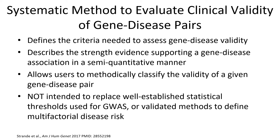Future iterations will expand the framework to consider the evaluation for oligogenic or multifactorial conditions. This original framework was described in a 2017 publication in the American Journal of Human Genetics (PMID 2855-2198) and in a detailed standard operating procedures document, which is updated periodically and available on our website.